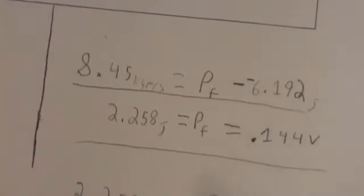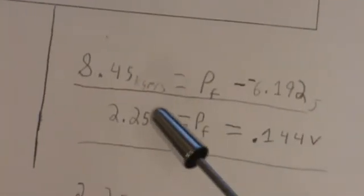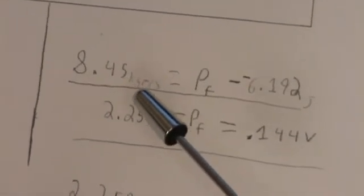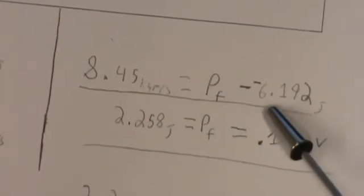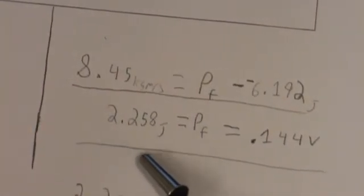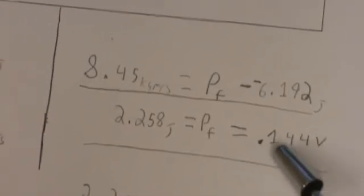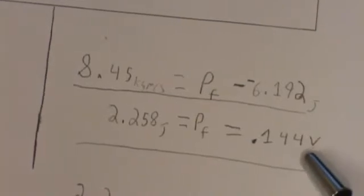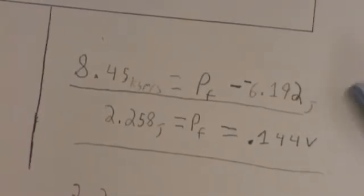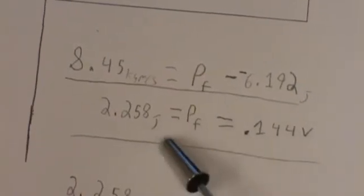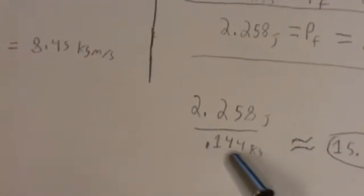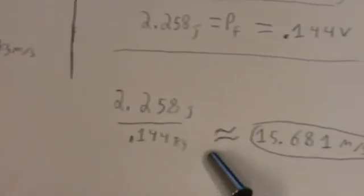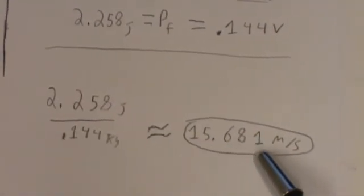Next, we take 8.45 kilogram meters per second and add 6.192, getting 2.258, which is equal to the final momentum. And since momentum equals mass times velocity, we divide 2.258 by 0.144. That approximately equals 15.681 meters per second.